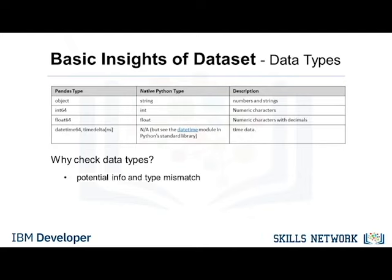For example, it would be awkward if the CarPrice column, which we should expect to contain continuous numeric numbers, is assigned the data type of Object. It would be more natural for it to have the Float type, and Jerry may need to manually change the data type to Float. The second reason is that it allows an experienced data scientist to see which Python functions can be applied to a specific column. For example, some math functions can only be applied to numerical data. If these functions are applied to non-numerical data, an error may result.